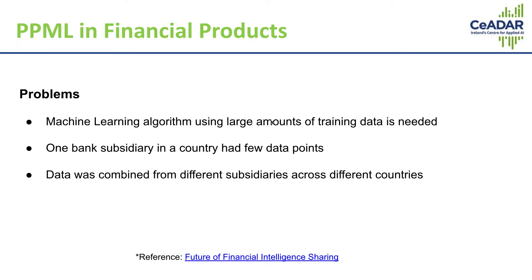The banking industry offers many different kinds of problems. Machine learning algorithms need a large amount of data to train, and in banking this data is distributed. In the case of Infer, this data was distributed across different banking subsidiaries in different countries. The laws of different countries required that this data should not go out. So then how do you create a model utilizing the data of all these banks?